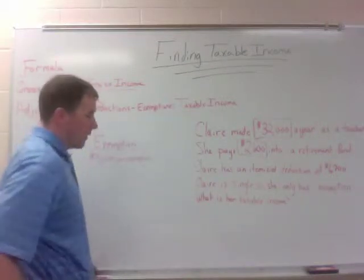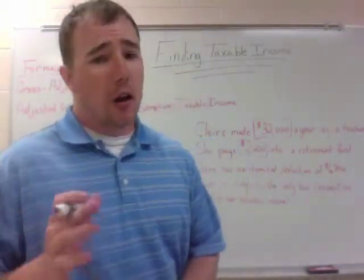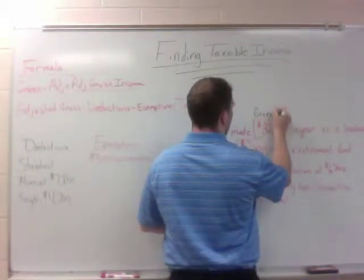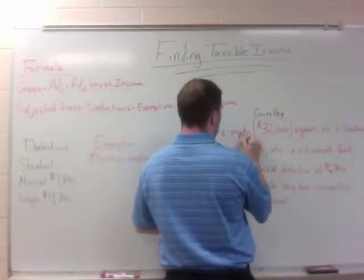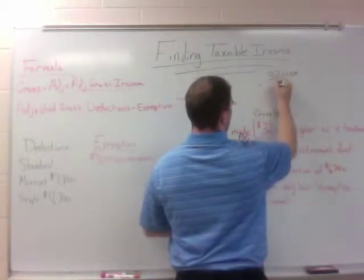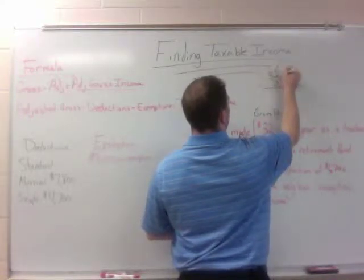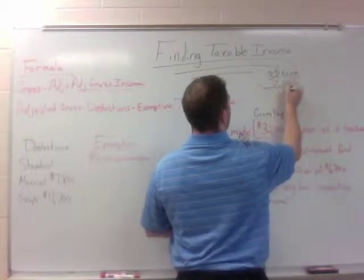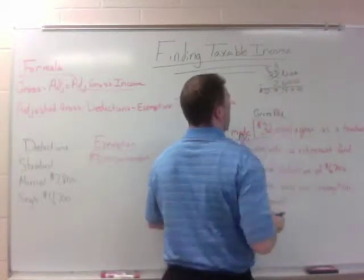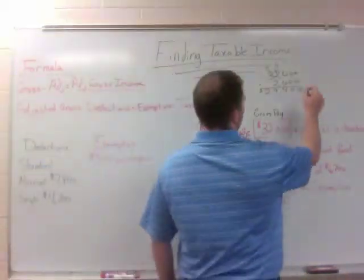We just want to find the adjusted gross income. To find the adjusted gross income, you take your gross pay and subtract your adjustments. So we're going to take $32,000 and subtract $2,600 from it. We borrow, and we get $29,400. That's our adjusted gross income. I'll write 'adjusted gross' so we can keep track of it.